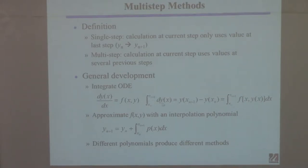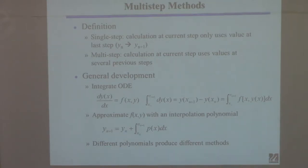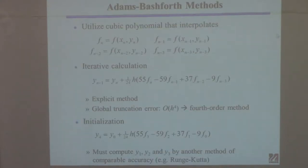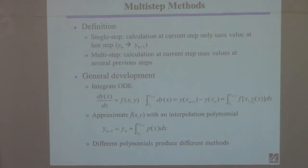You evaluate y at the two limits — those are the two values. The problem is you can't integrate the right-hand side. If you could integrate the right-hand side analytically, you wouldn't do numerics — you would just integrate it and get the answer. So what do you do if you can't integrate the right-hand side? Substitute in something that approximates the function that you can integrate.